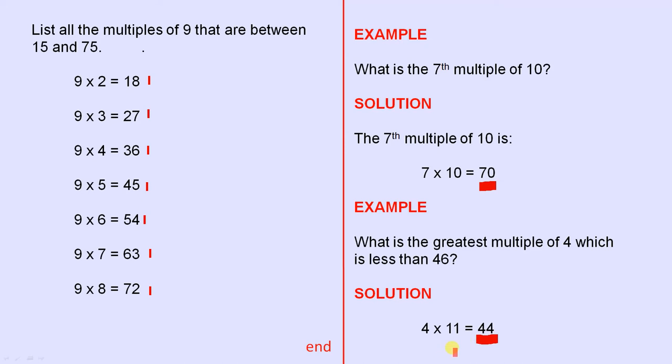Because 4 times 12 is 48 and that's greater than 46. So the greatest multiple of 4 which is less than 46 is 44.